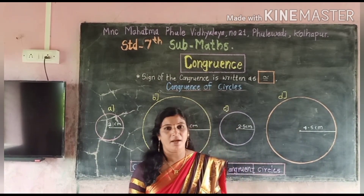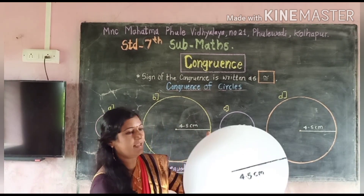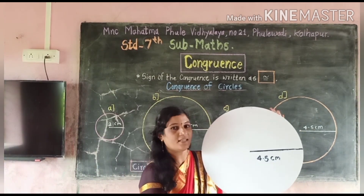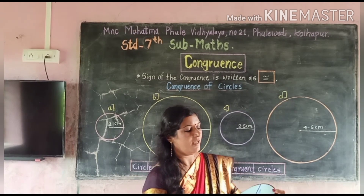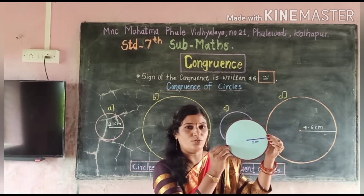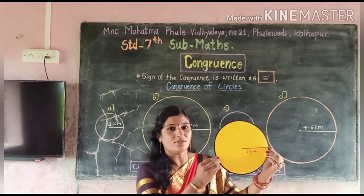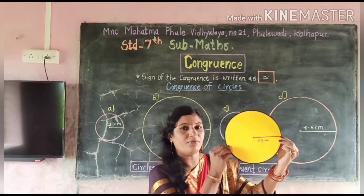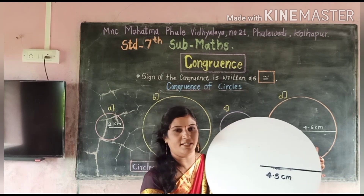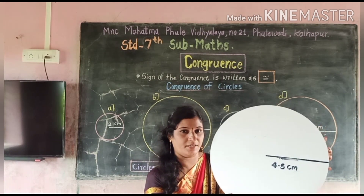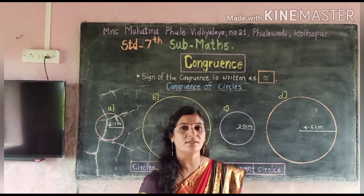Now here I have made some circular cutouts with the given radii. The radius of this cutout is 4.5 cm, the radius of this one is 2 cm, the radius of this one is 2.5 cm, and the radius of this one is also 4.5 cm.